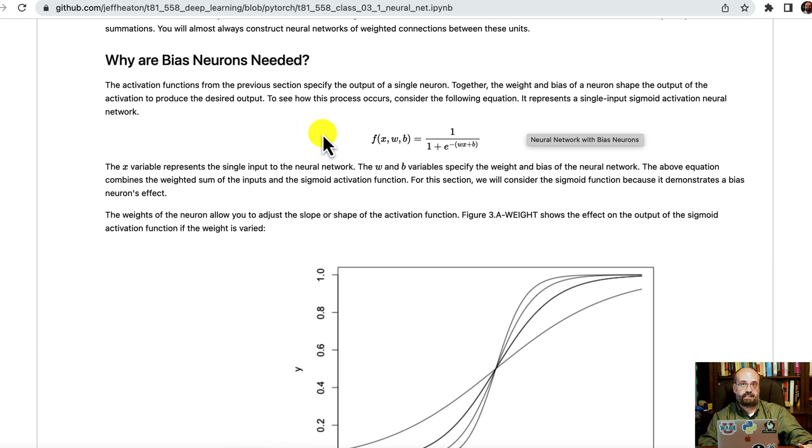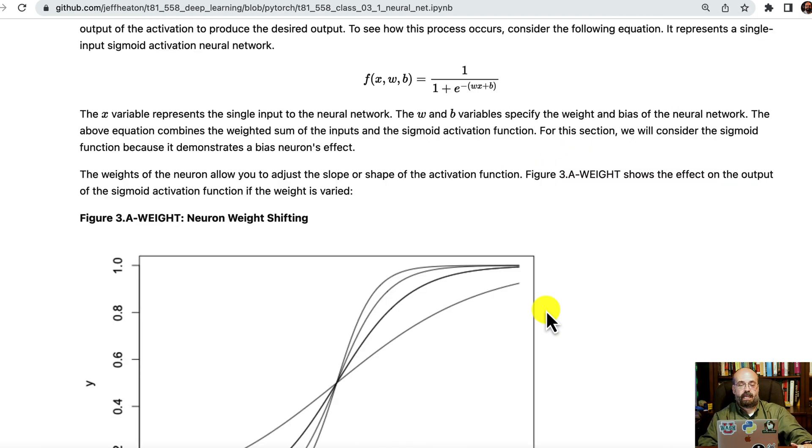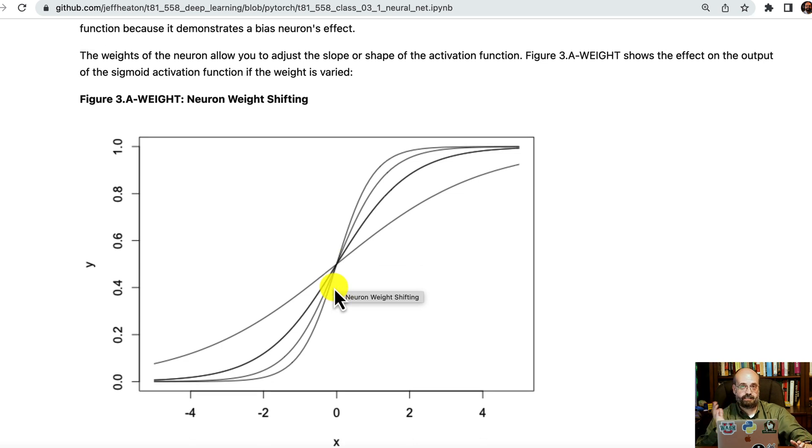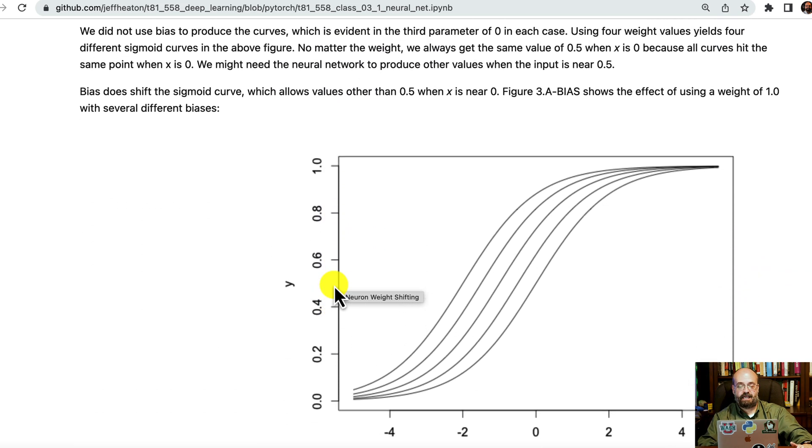So why do we need those bias neurons? They are the intercept. So if you take the sigmoid function here, which is a common activation function, and we pass into it the weights and the biases, and we vary, as we vary the weight between these values, the output is going to change. But notice where it intercepts stays the same. You're only adjusting the slope by adjusting the weight. If you adjust the bias neuron input between these values, then you can see that you're shifting it back and forth. They all converge to largely the same thing. That's the way the sigmoid works. But using those two parameters together, you can really adjust the overall curvature, because you can shift back and forth with the bias, and you can adjust the slope with the weight.